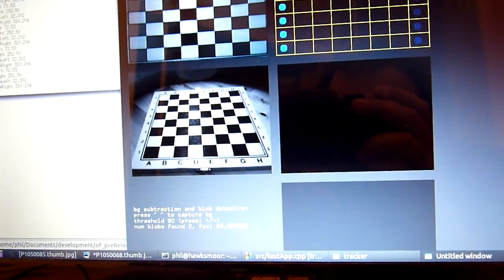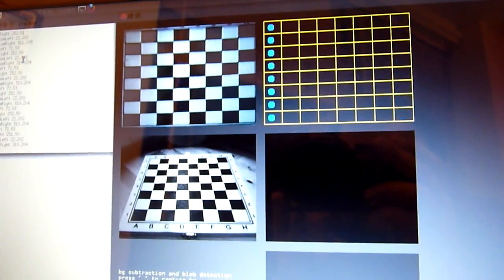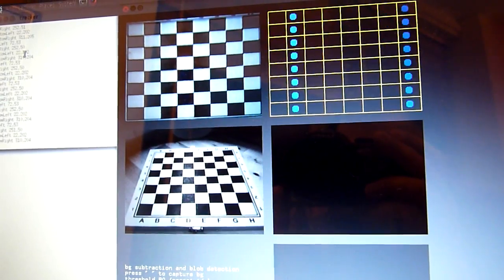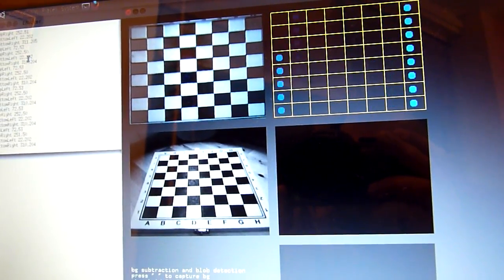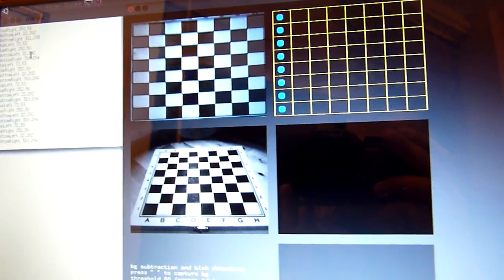That's just the static background image now. That's after the calibration, it's been transformed into a more perpendicular view of the chessboard.